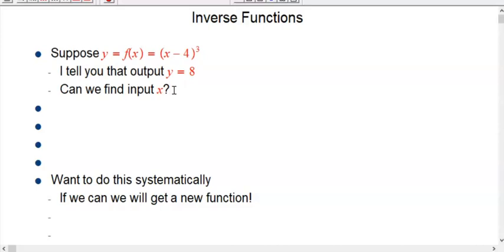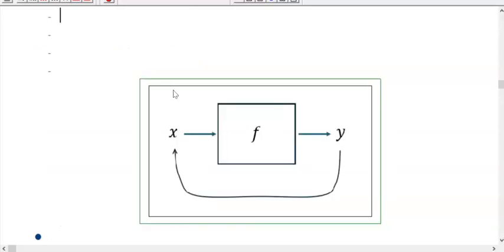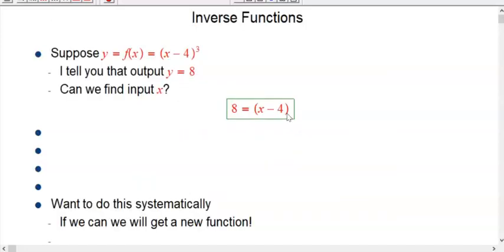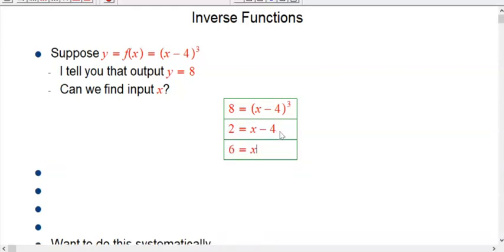So can we find the input? Yeah, absolutely. So here, because we know the number for y we can put that in, we're going to make this more sophisticated in a minute. But let's just see if we can do it for a number. One crucial thing here is that there's only one cube root of 8. It's not plus or minus, that's really, really crucial. So you cube root both sides, and there's no ambiguity here. And we indeed get that x must be 6. So we could find the input.